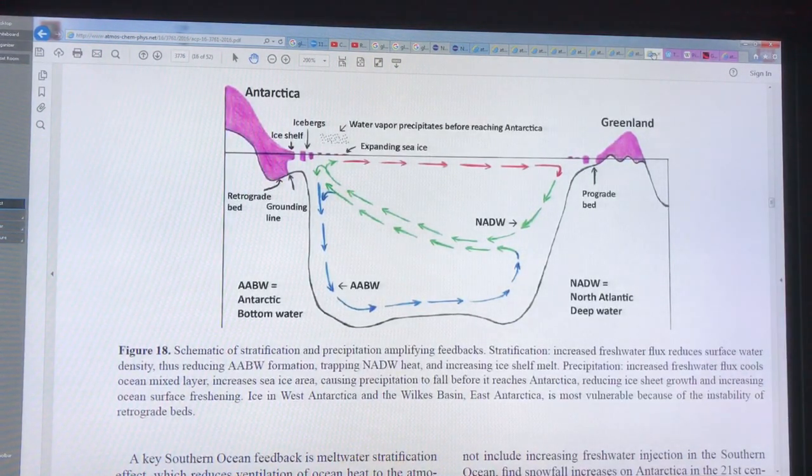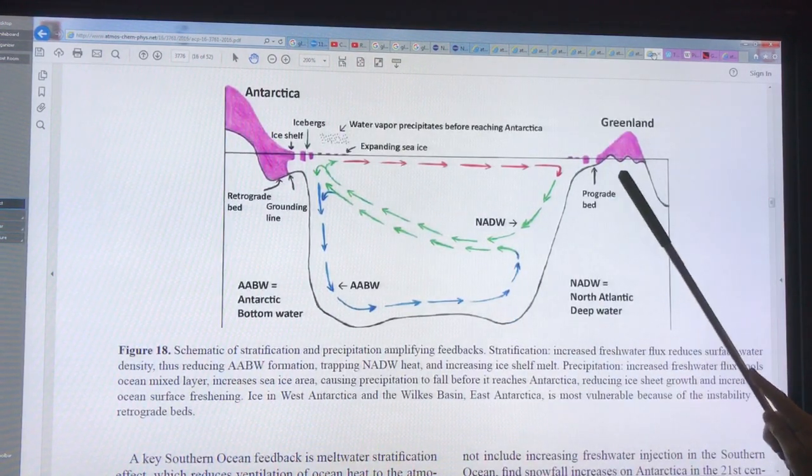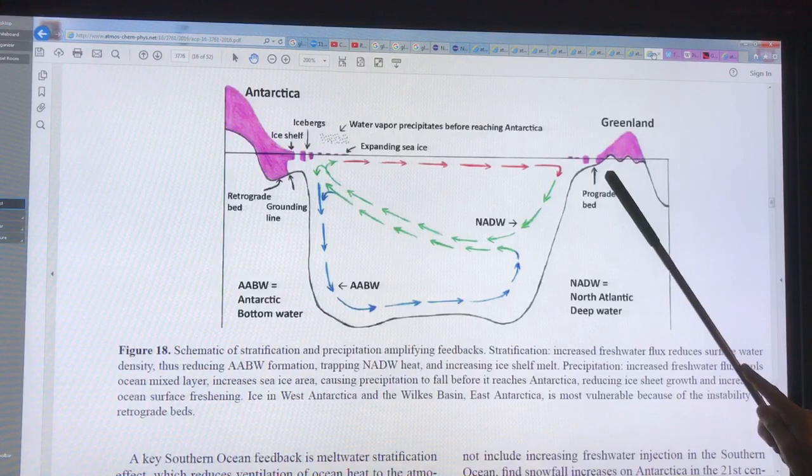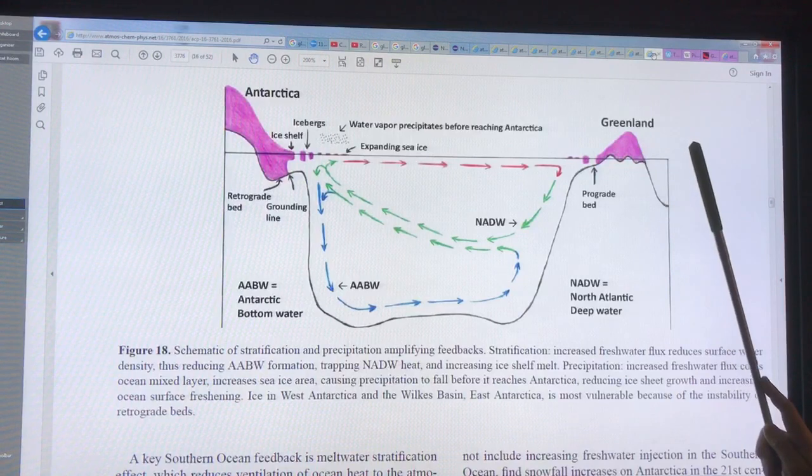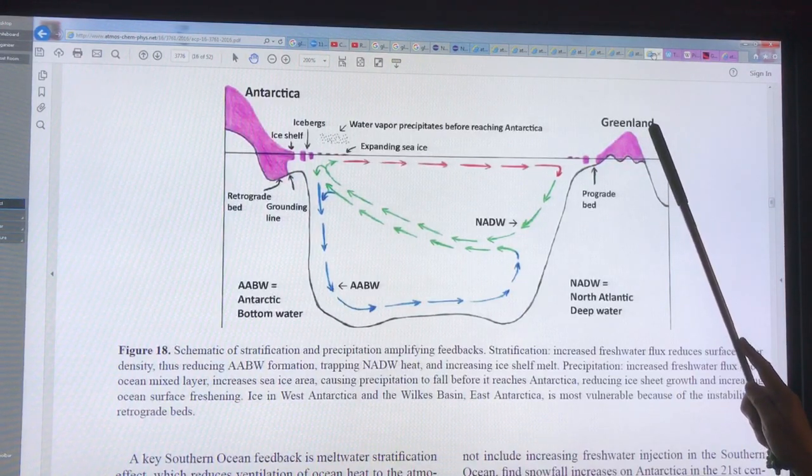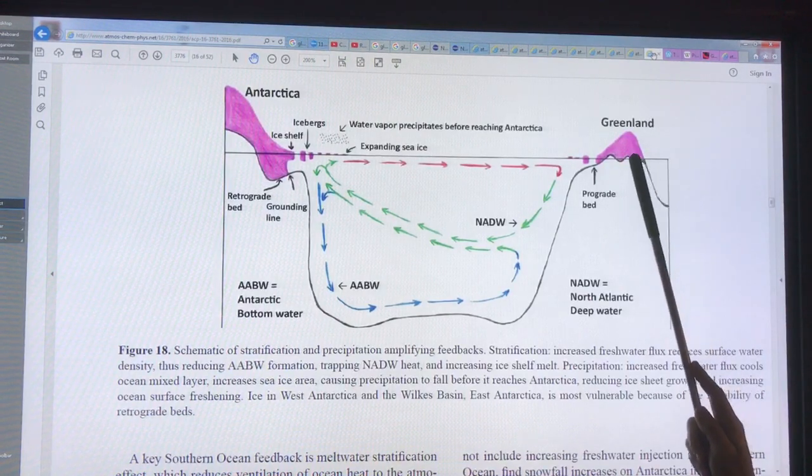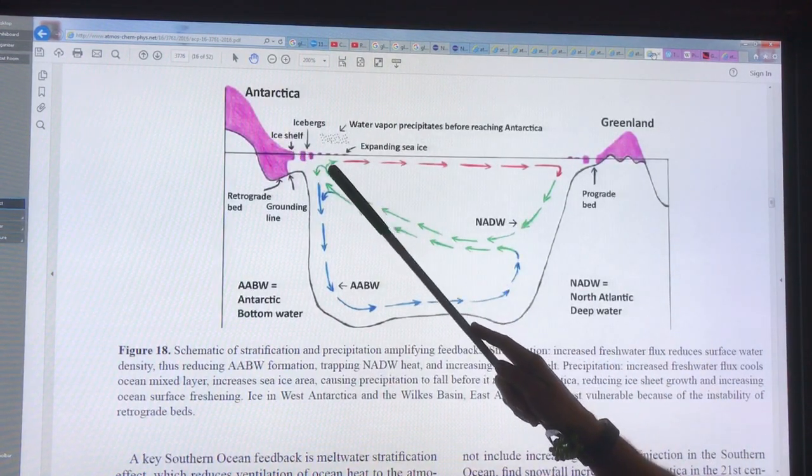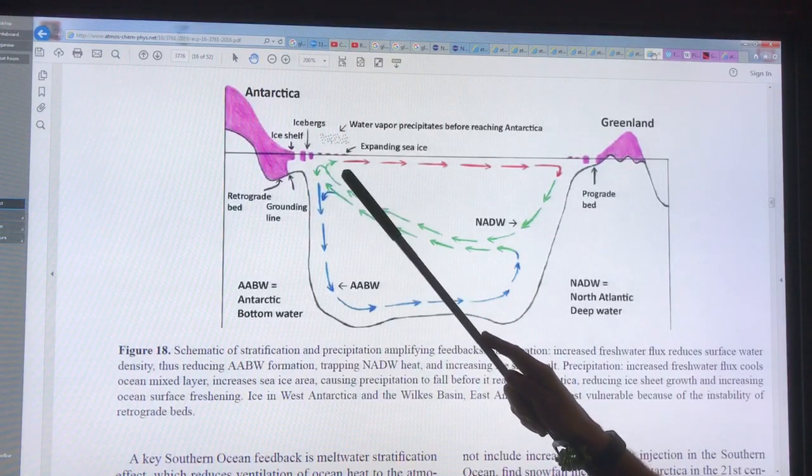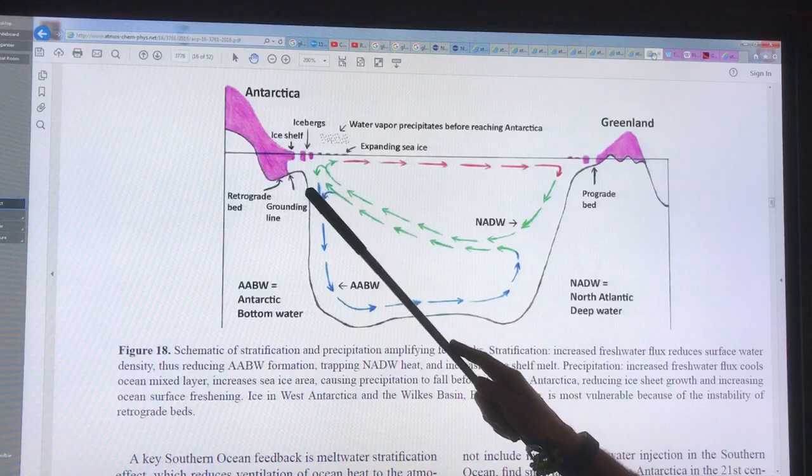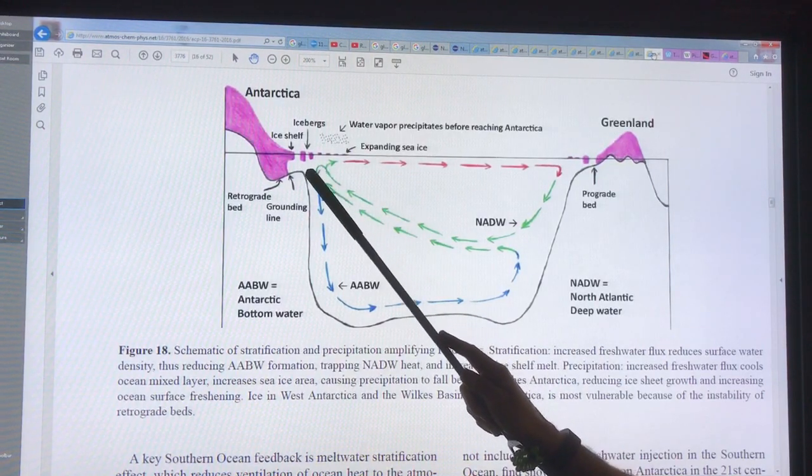This is showing a nice cartoon. We've got Antarctica here, Greenland here. We've got a lot of prograde beds in Greenland, so it gets shallower as you go inland. You get calving, and as you get more calving you're taking the cork off the bottle, so the glaciers on land move faster and you get accelerating loss of ice. On Antarctica we have a lot of retrograde beds, so as the ice melts back it's not supported. It loses the grounding line points, and once it passes a grounding line you can get massive calving back down to the previous grounding line.